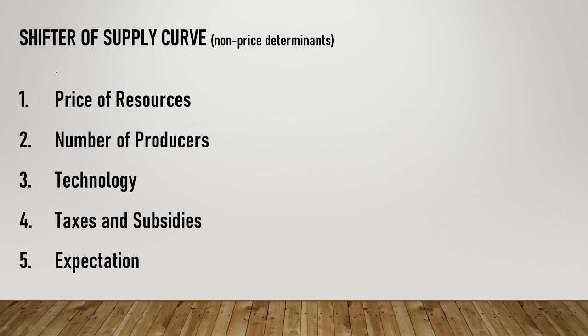Number two, number of producers. If the number of producers increases or decreases, if the number of producers increases, therefore without changing the price, the supply increases. For example during the pandemic, there was a lack of supply of face masks. Eventually more suppliers came in, so the supply increased while the price didn't change.